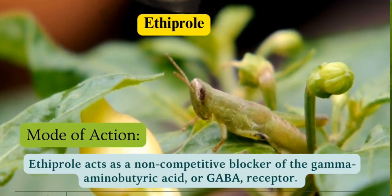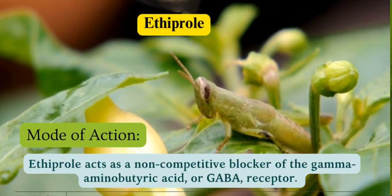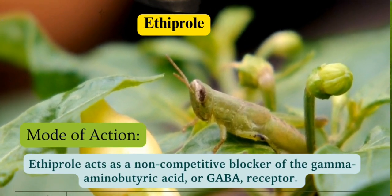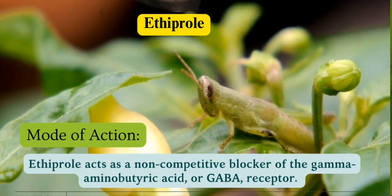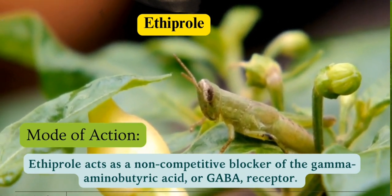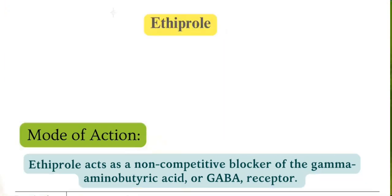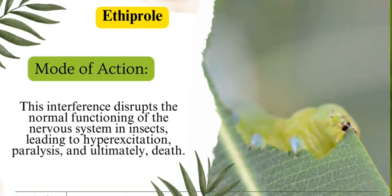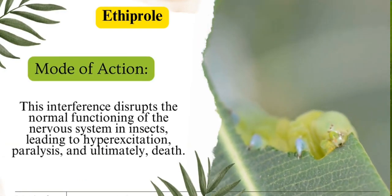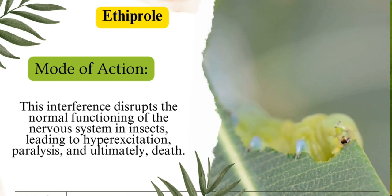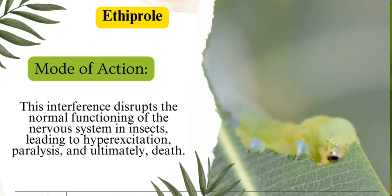Mode of action. Ethiprol acts as a non-competitive blocker of the gamma-aminobutyric acid, or GABA, receptor. This interference disrupts the normal functioning of the nervous system in insects, leading to hyper-excitation, paralysis, and ultimately death.